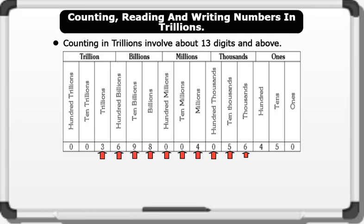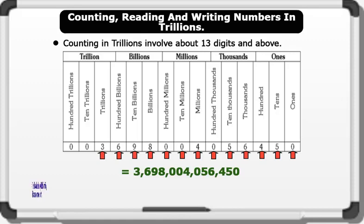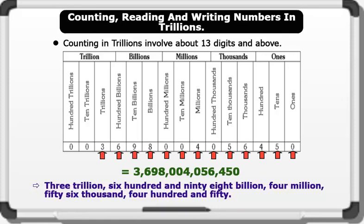6 is placed in the tens of thousands column, 4 is placed in the hundreds column, 5 is placed in the tens column, and 0 is placed in the ones column. This gives us 3,698,004,056,450. Therefore, this expression is written as 3,698,004,056,450. That's brilliant.